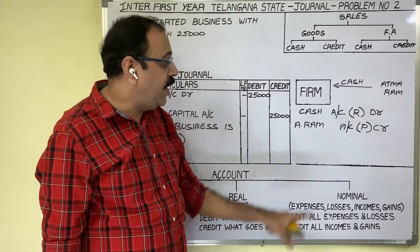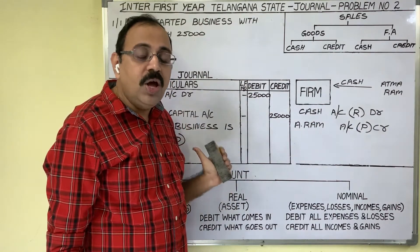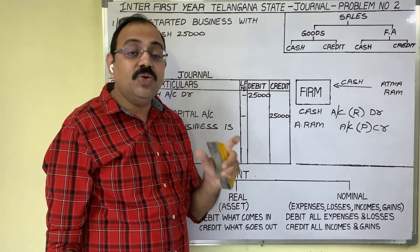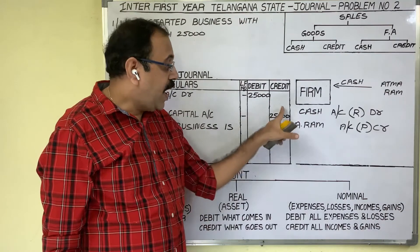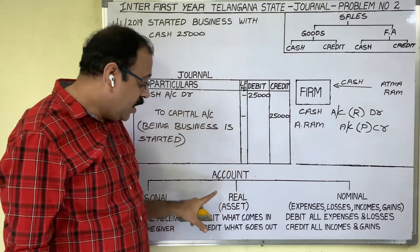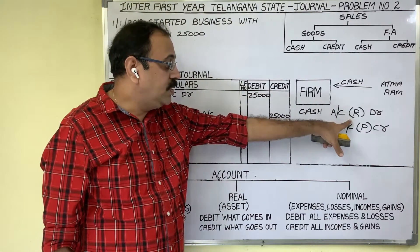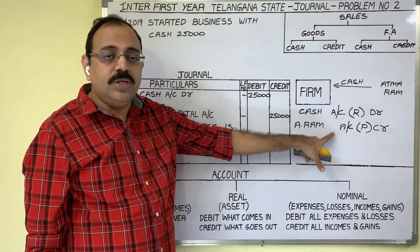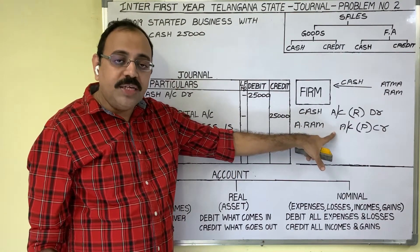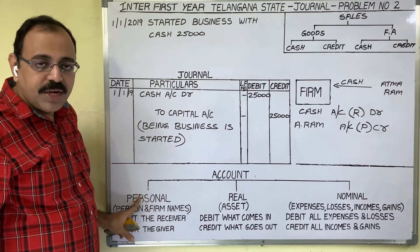We should identify whether the cash account is a personal account, real account, or nominal account — that is known as grouping. Cash is an asset name; all assets come under real accounts. So cash account is a real account. Atmaram account — with a person name we open this account, therefore it is a personal account. Grouping is completed.